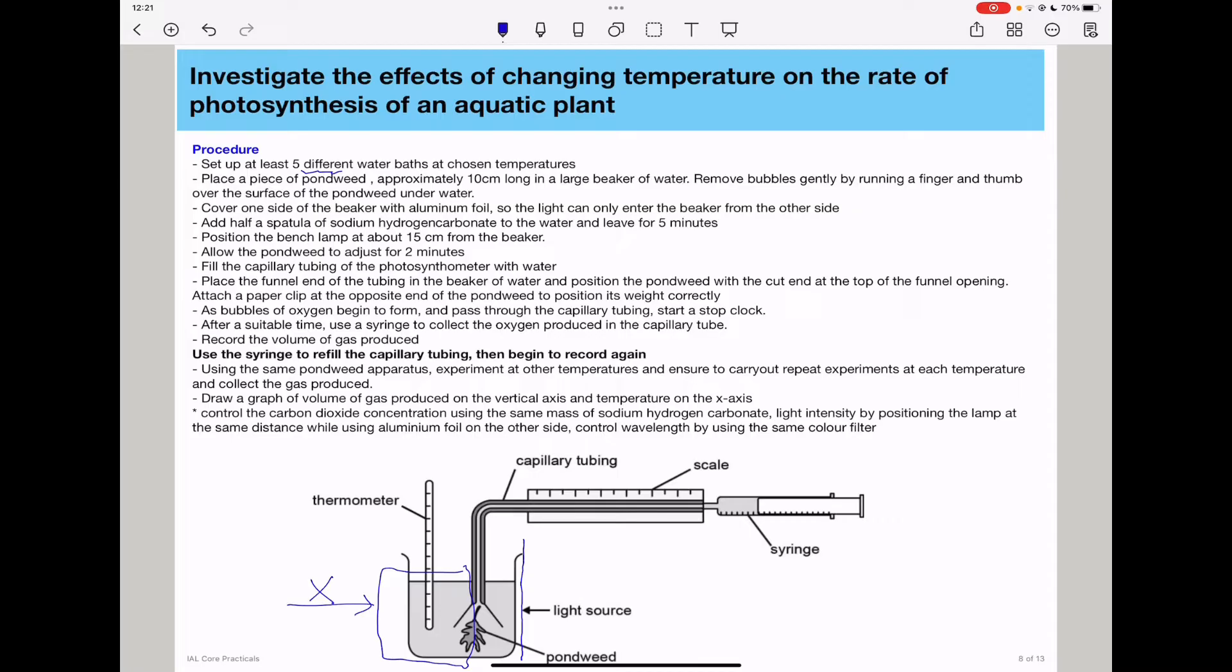You need to place a piece of pondweed, approximately 10 centimeters long, in a large beaker of water and remove bubbles gently by running a finger and thumb over the surface of the pondweed underwater. Some people decide to cut the pondweed underwater to prevent bubbles from forming, because bubbles will interfere with your experimental results.